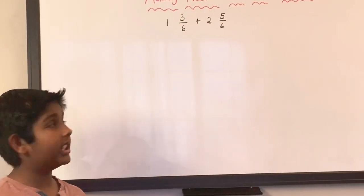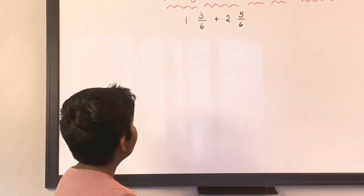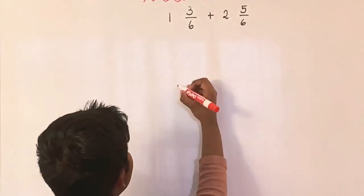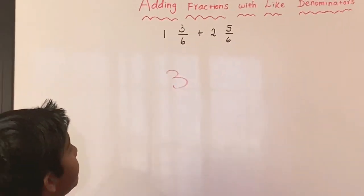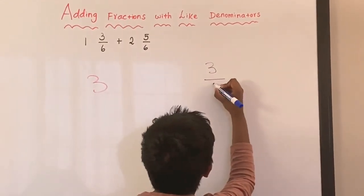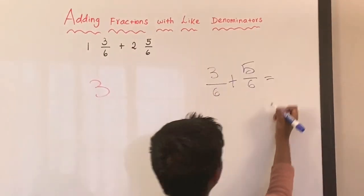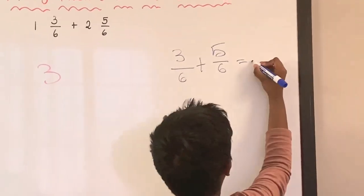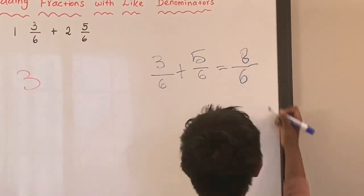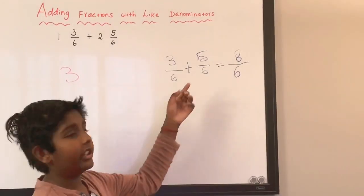In this question we can solve it in two ways. The first way: we add the wholes, so one plus two is three. Then we add three over six plus five over six. The denominator is the same so it stays as itself — six — and then three plus five equals eight. This is an improper fraction and we can reduce it.